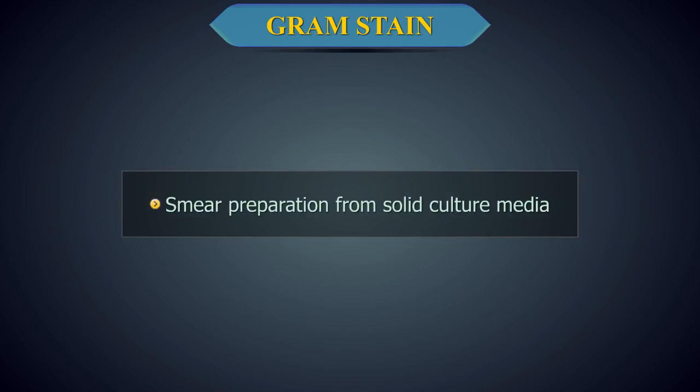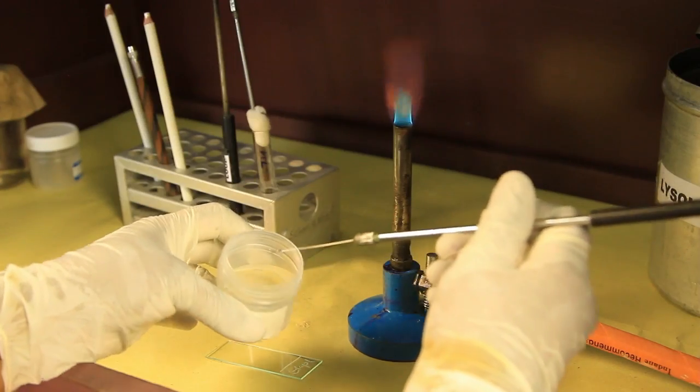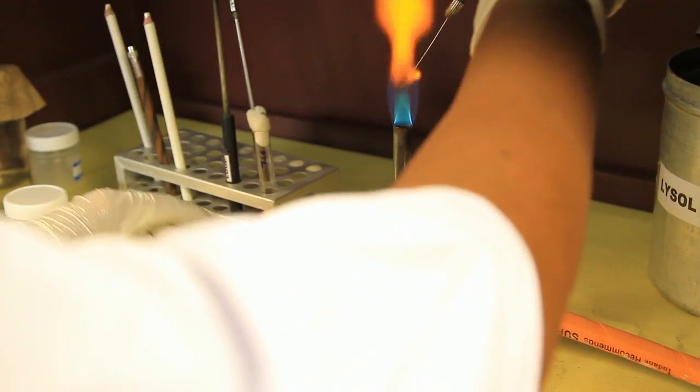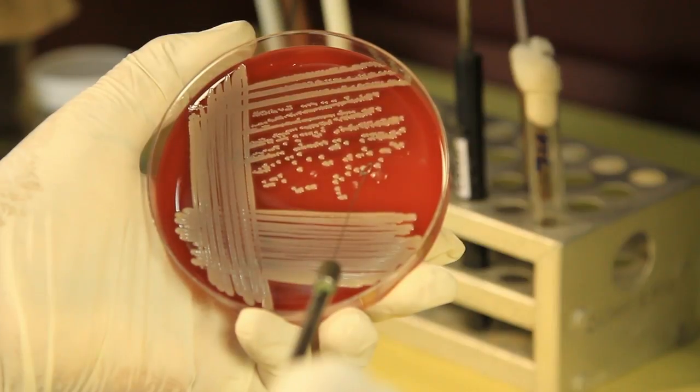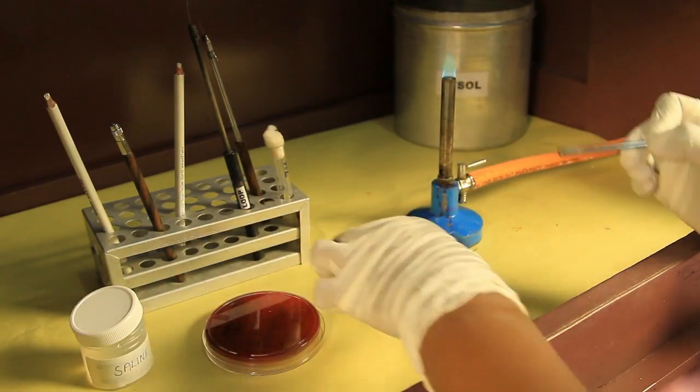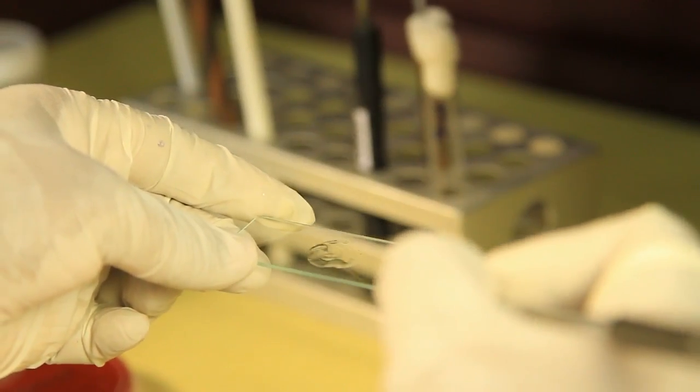Smear Preparation from Solid Culture Media. Take a loopful of normal saline and smear it onto the middle of a glass slide. With a sterile inoculating loop, pick a colony from the culture plate and emulsify into the saline while spreading the smear. Let the smear air dry.